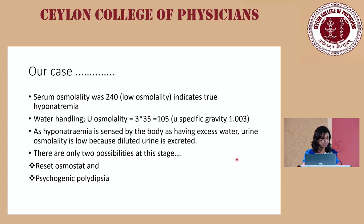Going back to our case: her serum osmolality was 240, which is low, indicating true hyponatremia. Calculating urine osmolality from specific gravity 1.003 — taking last two digits (03) multiplied by 35 — gives 105, which is low urine osmolality. With low urine osmolality, we are left with two possibilities: reset osmostat or psychogenic polydipsia. Since no causes for reset osmostat were found in this case, the diagnosis is psychogenic polydipsia.